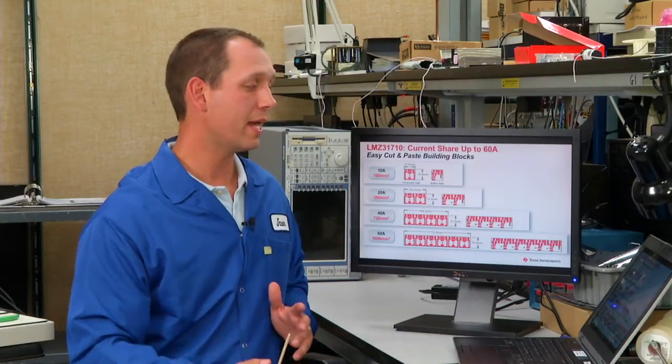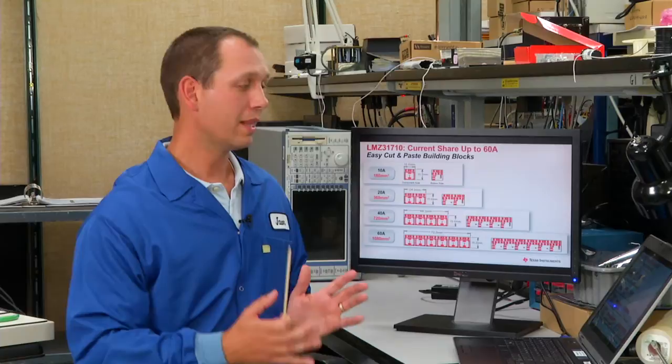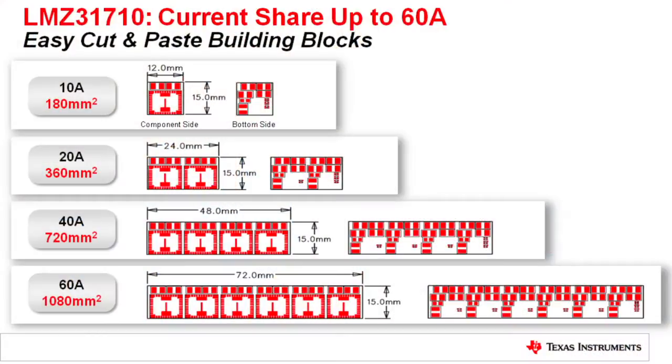The LMZ31710 layout allows us to build and select the amount of output current we need in a building block fashion. As you see from this slide, one device, two devices, four devices, or six devices for up to 60 amps can easily be placed like cut and paste into your design.